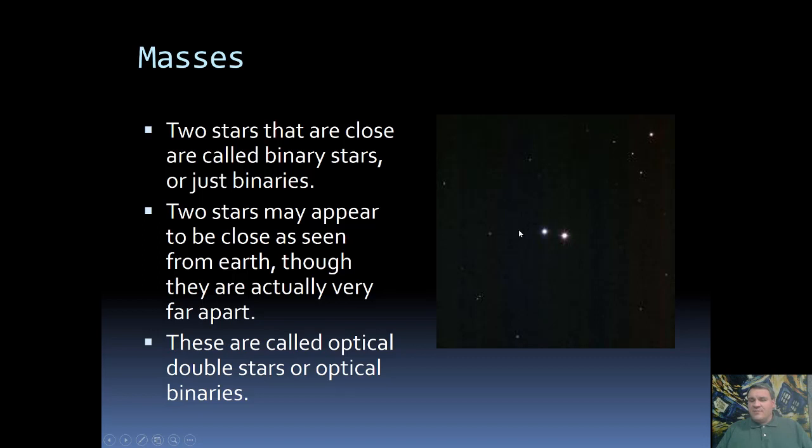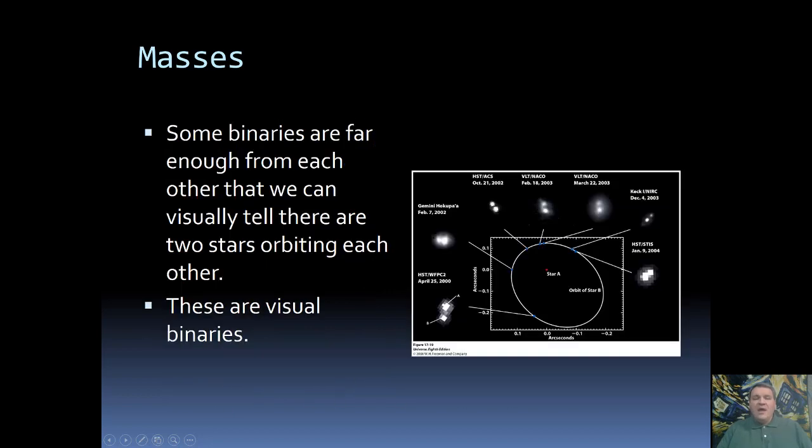These types of stars that appear close but are not actually close together, these are known as optical double stars, sometimes called optical binaries. Now, sometimes we do have two stars that don't just appear close, they actually are close and they're orbiting around each other.